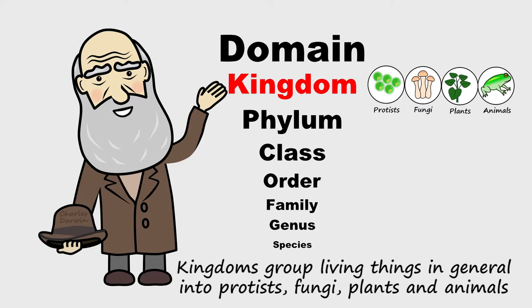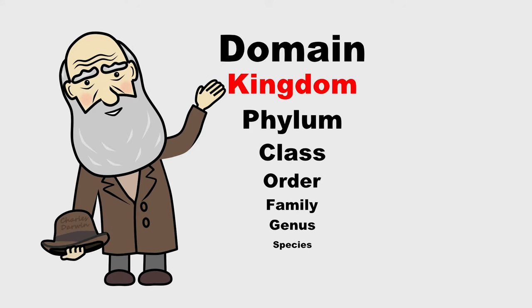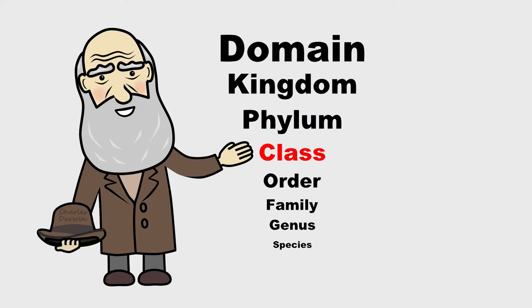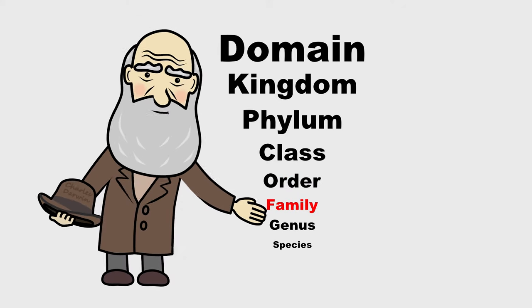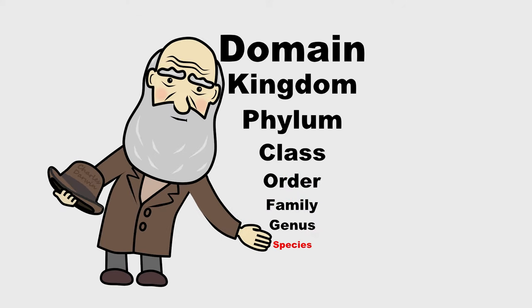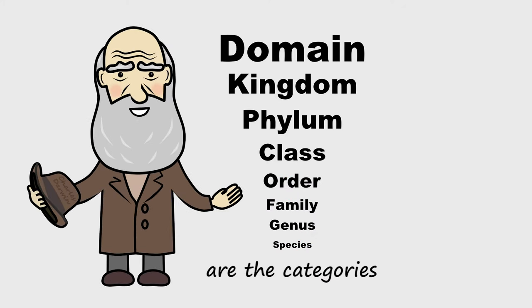Kingdoms group living things in general into protist, fungi, plants and animals. Domain, kingdom, phylum, class, order, family, genus, species are the categories.